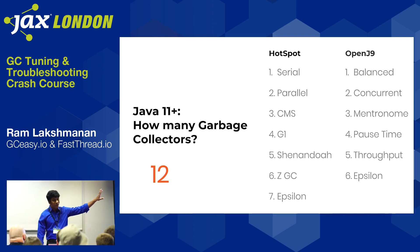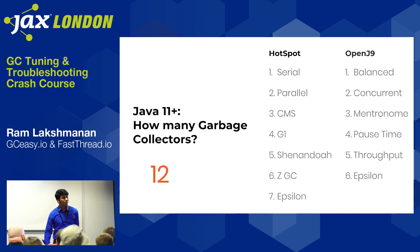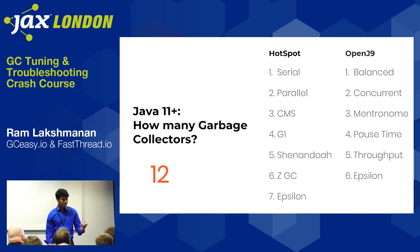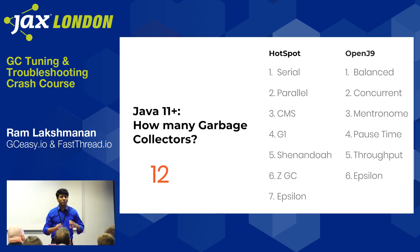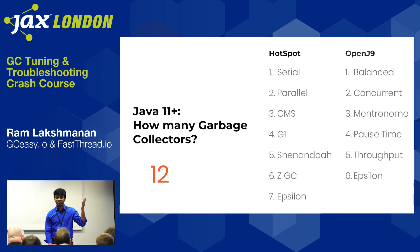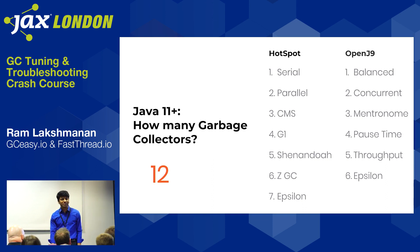This covers HotSpot JVM and the scalable high-performance OpenJ9 JVM. If you take Azul, they have their own flavors of garbage collectors. Android devices, which run on a modified version of the JVM, also have their own garbage collectors. There are so many different garbage collection algorithms, and each algorithm behaves differently.